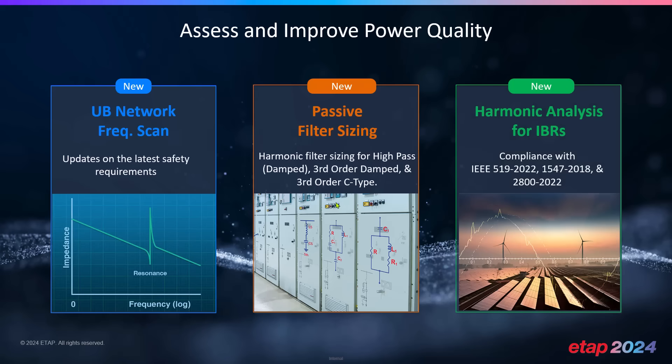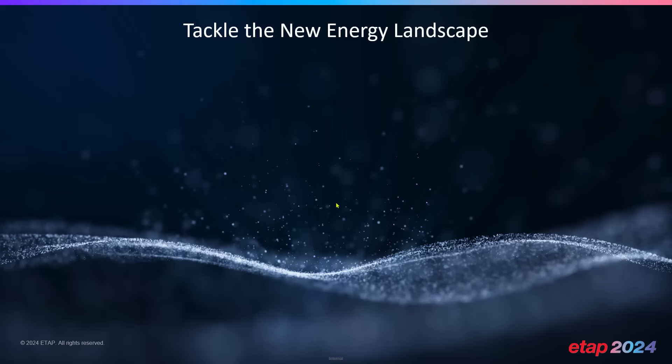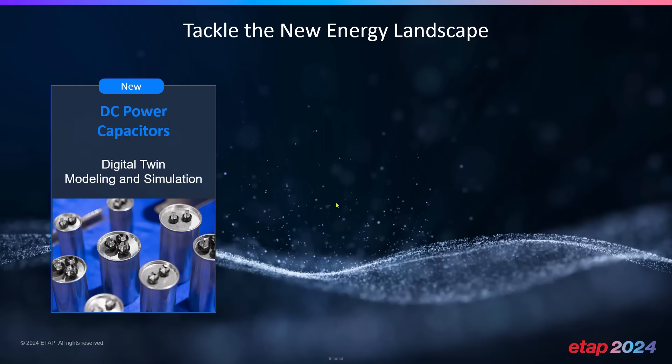With the proliferation of energy storage devices and renewable energy comes the core component of inverters, or inverter-based resources. There have been recent changes in harmonic standards, particularly in IEEE 519, so ETAP 2024 includes compliance and rules based on IEEE 519-2022, IEEE 1547, as well as IEEE 2800, to make sure you are up to date with the latest standards needed for power quality compliance.